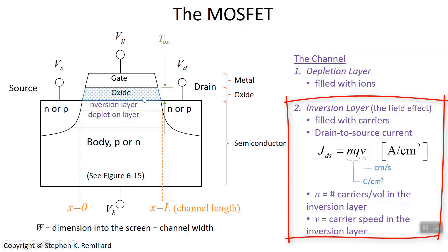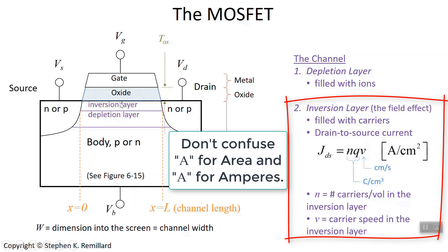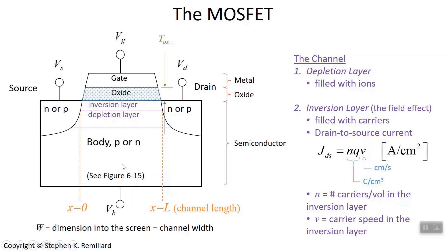If you have a potential difference between the source and the drain, current is going to be pushed through, because the inversion layer is full of charge that may as well flow as current. We'll call it the drain-source current. The drain-source current density, remember, is N times the fundamental charge unit times the speed — that's the current per unit area as current passes through the inversion layer, where the area A is the cross-sectional area the current has to pass through. N is the carrier concentration, or P for holes in an N-type semiconductor.